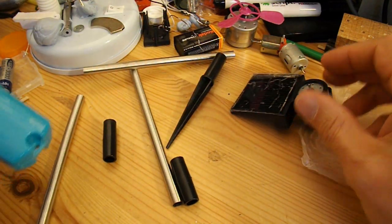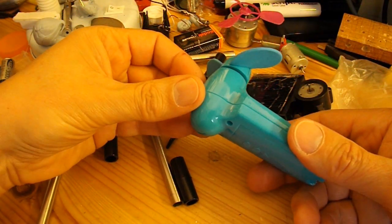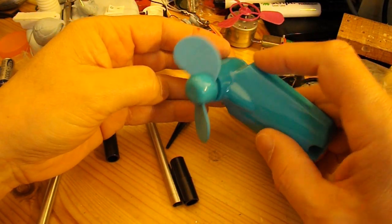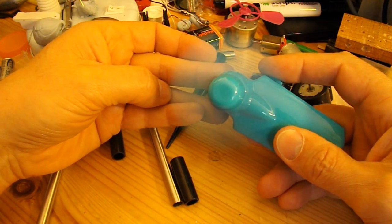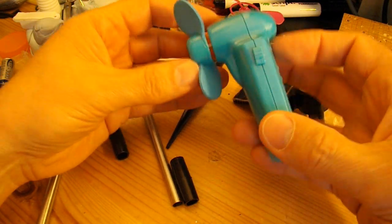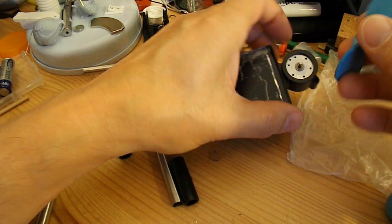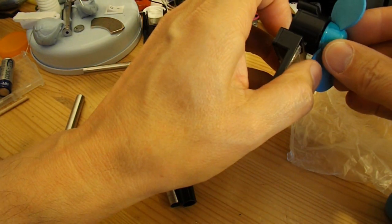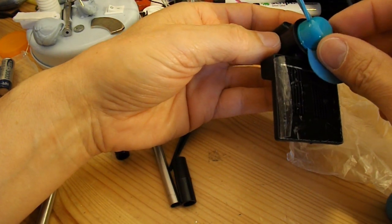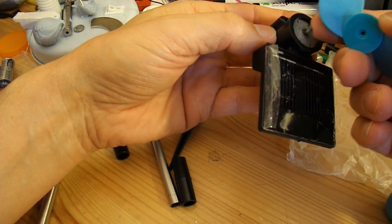So if we want to make a fan with it, if I take this cheap hand-held fan and pull the fan off it and put it on there, it won't fit straight because that shaft's a little bit smaller.